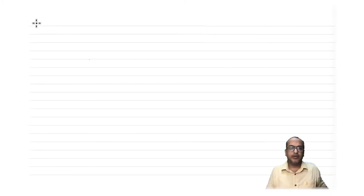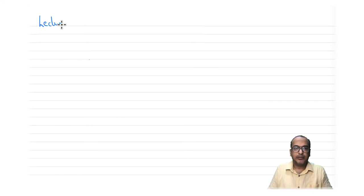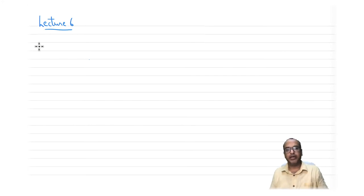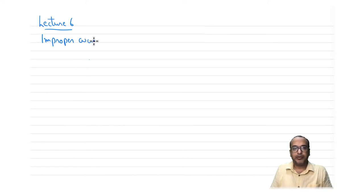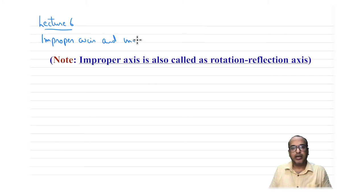Welcome everyone, welcome to lecture 6. We continue our discussion of symmetry elements and symmetry operations. In this set we have the last symmetry element and symmetry operation, which is called the improper axis, and the corresponding operation is called improper rotation.